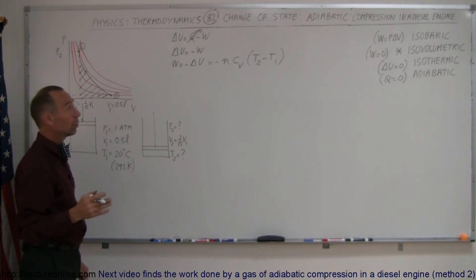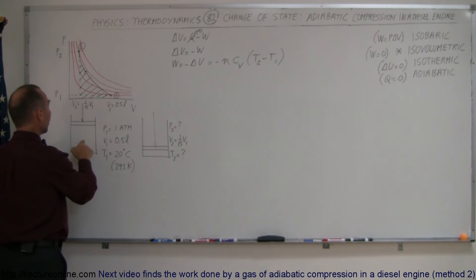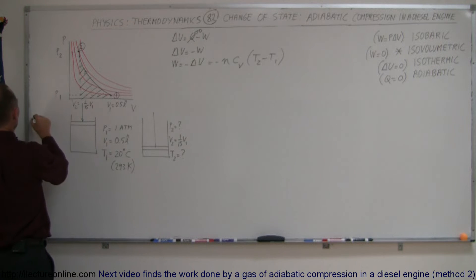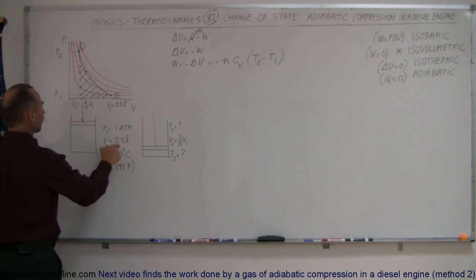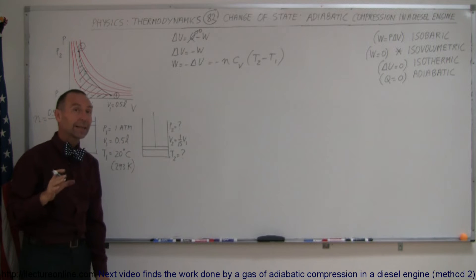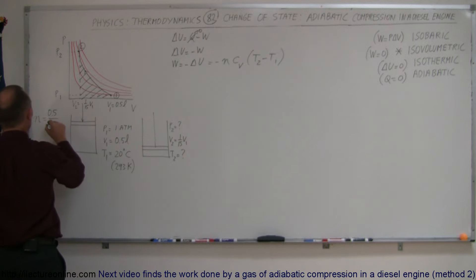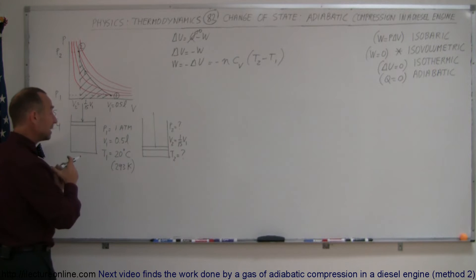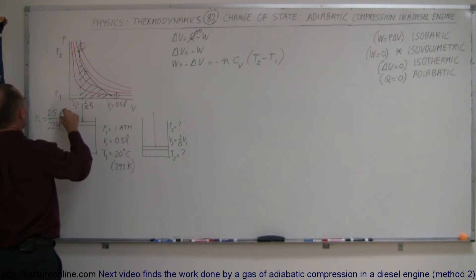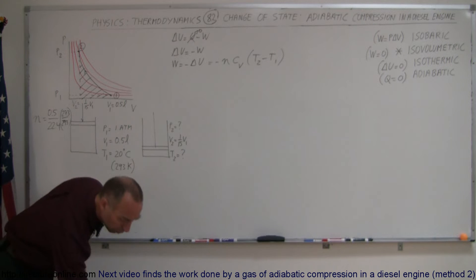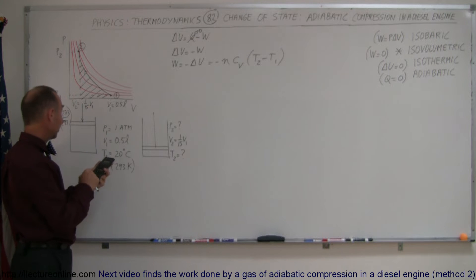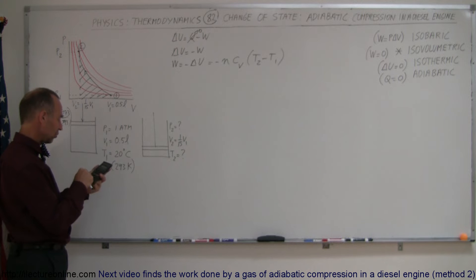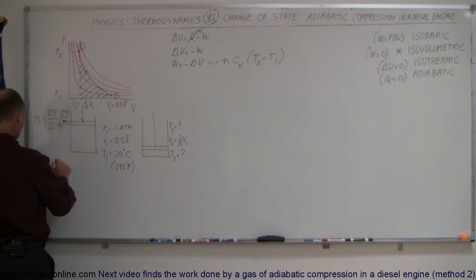We know the volume, pressure, and temperature, so we can find the number of moles. N equals 0.5 liters divided by 22.4 liters — the volume any gas takes at STP conditions. Since the temperature is 20°C instead of 0°C, the gas is expanded somewhat, so we multiply by 273 divided by 293 to compensate for the temperature difference from STP. That gives us N equal to 0.0208 moles.